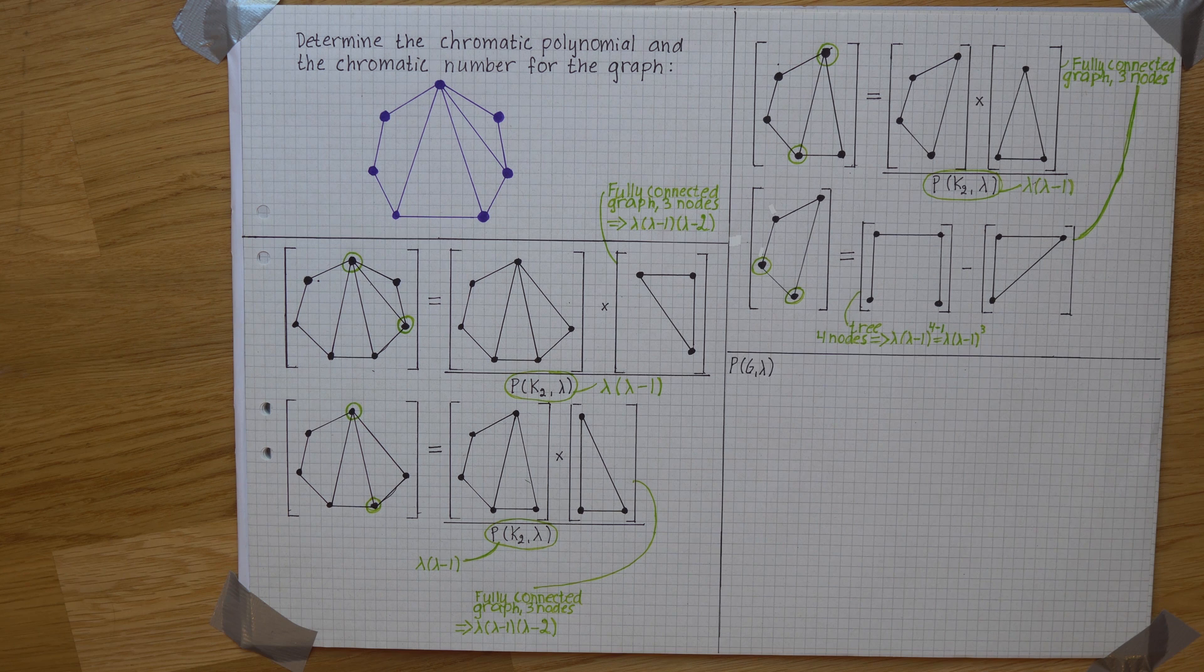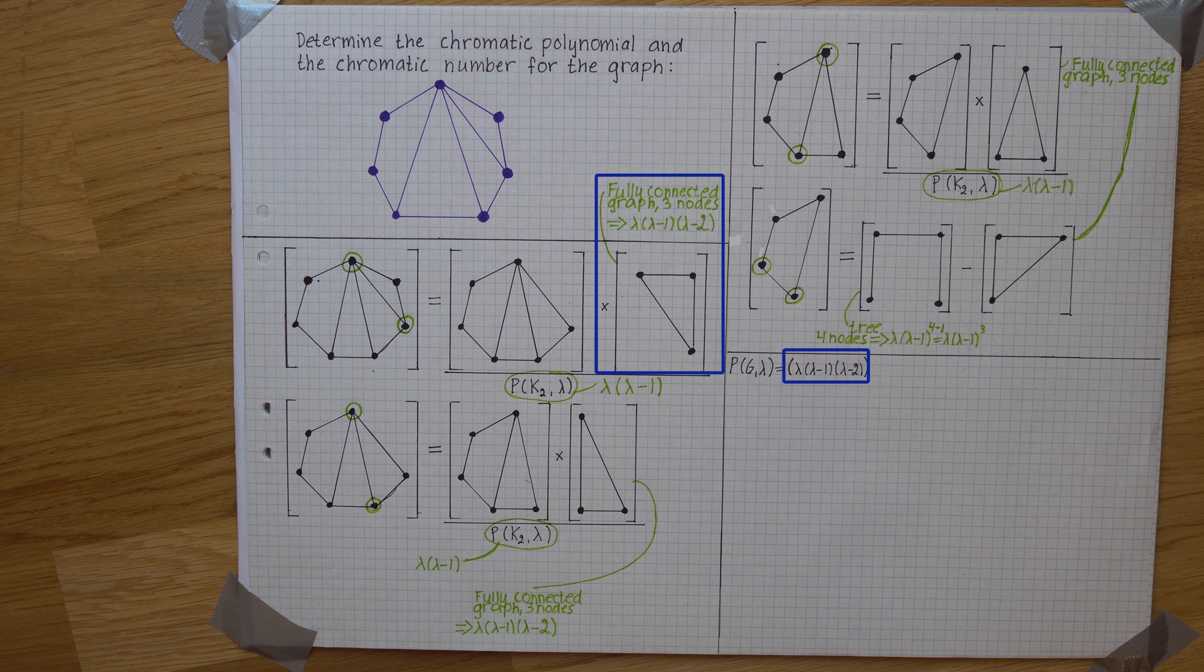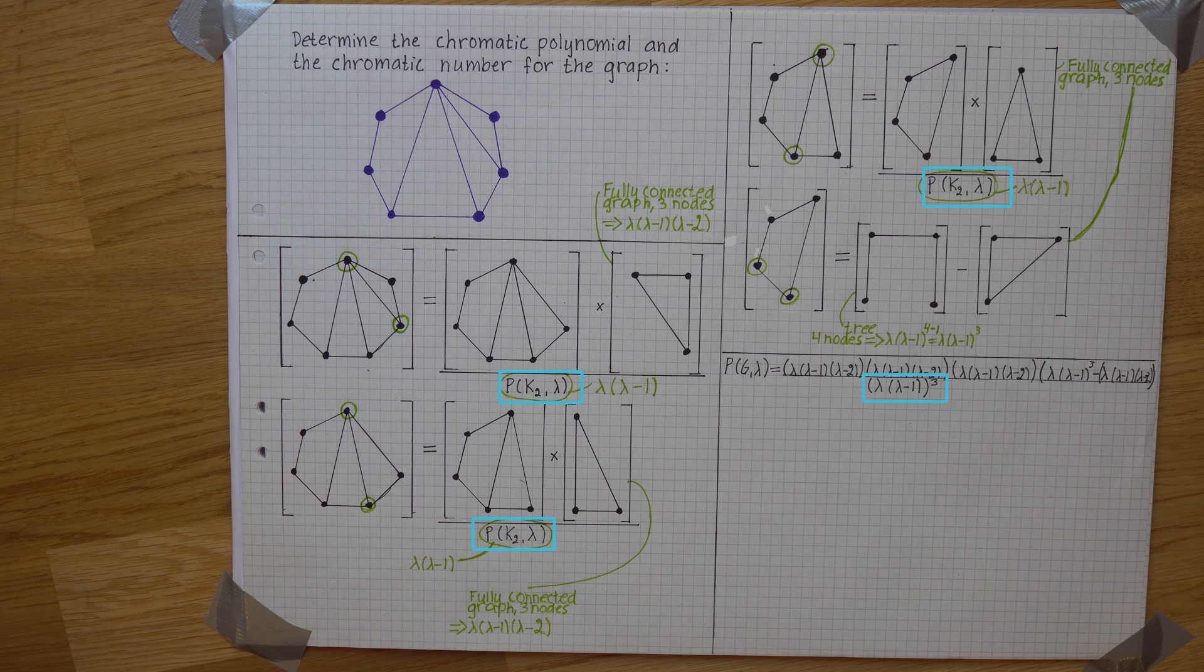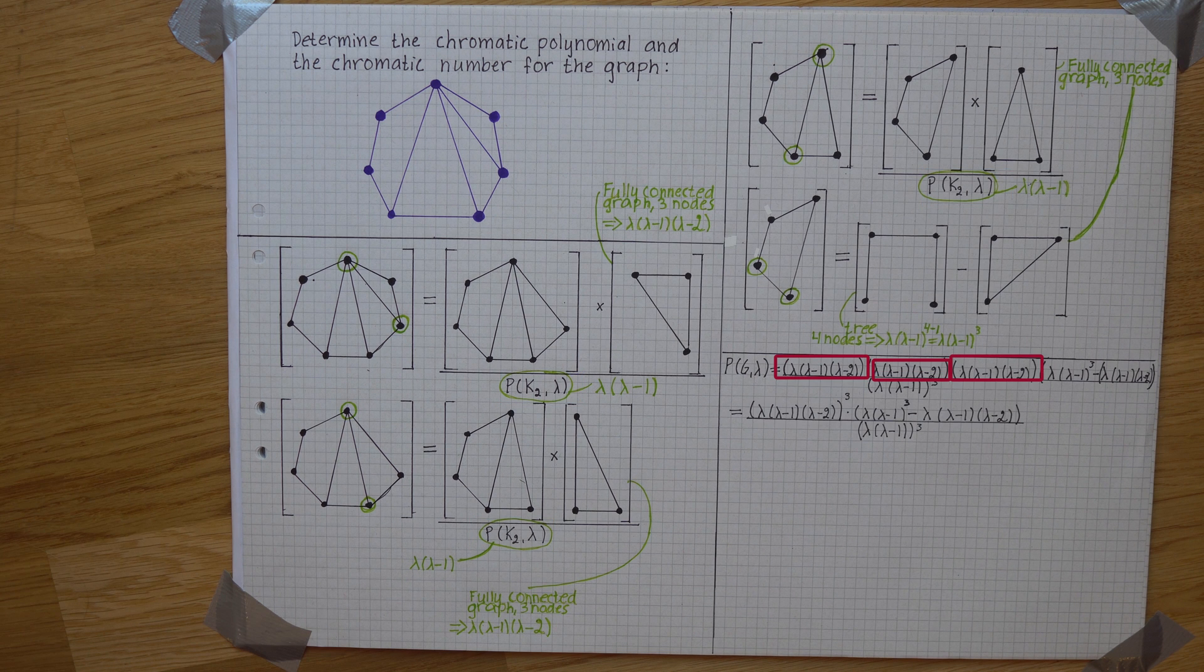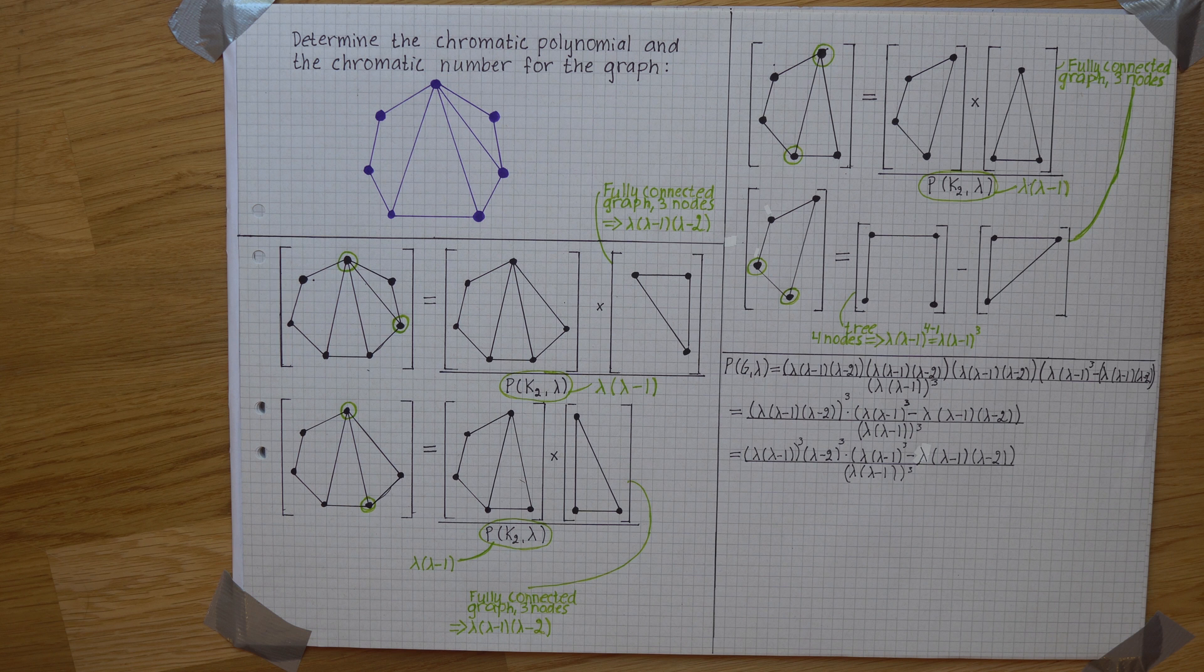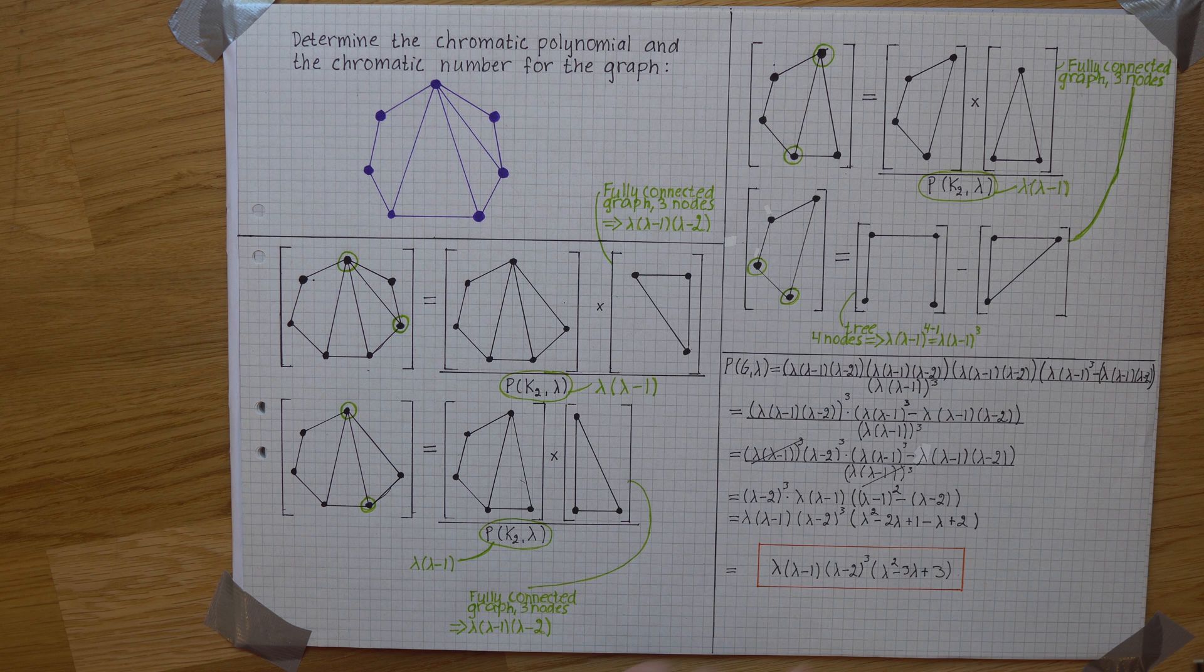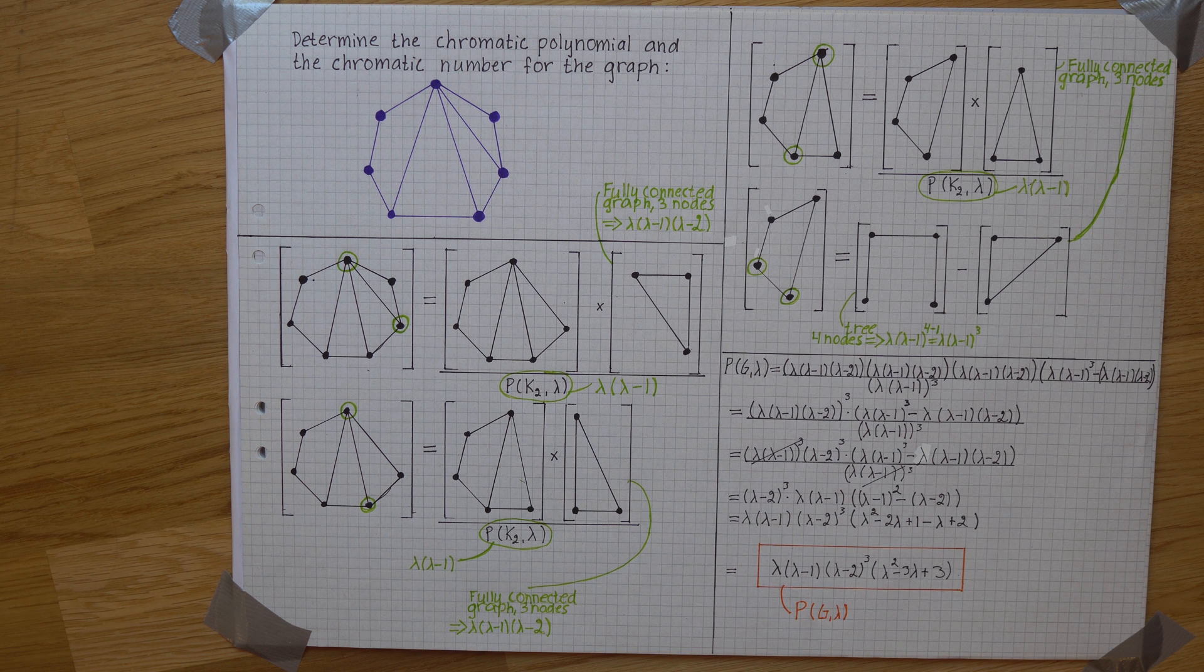In order to get the chromatic polynomial for the main graph, we now combine what we have from the subgraphs. We'll combine these three expressions into one. That means the division goes and we eventually end up with this, a chromatic polynomial.